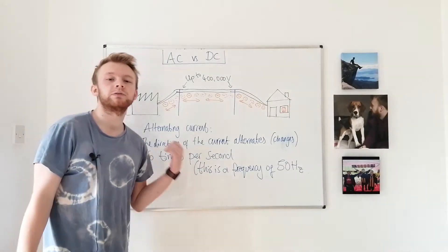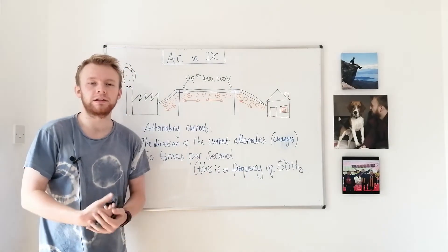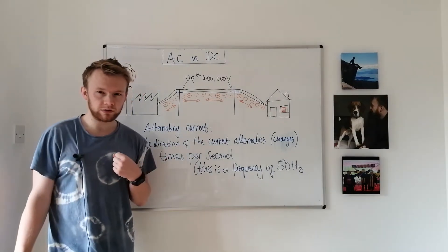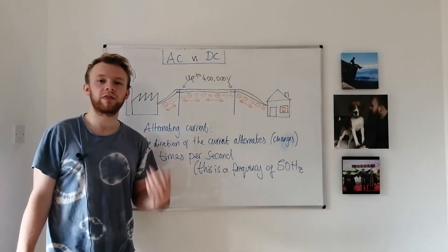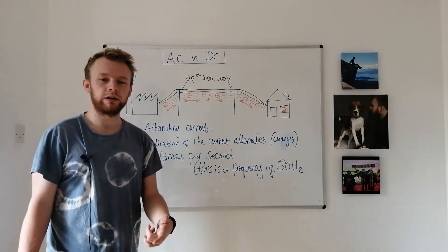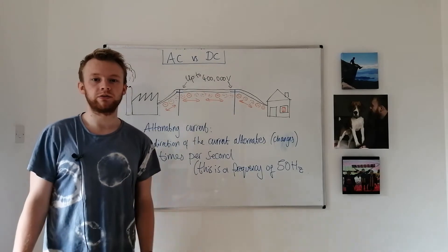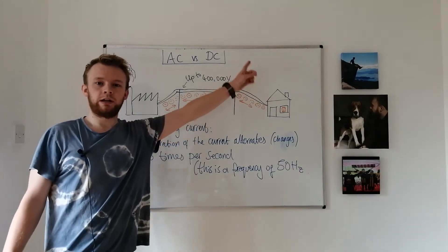The national grid uses alternating current to distribute electricity around the country. And using this system we can increase the voltage up to 400,000 volts with a transformer. And I did a little video on transformers which should be appearing up there now.